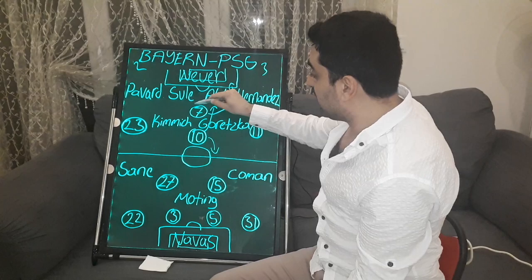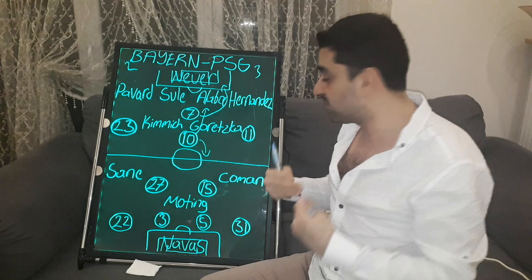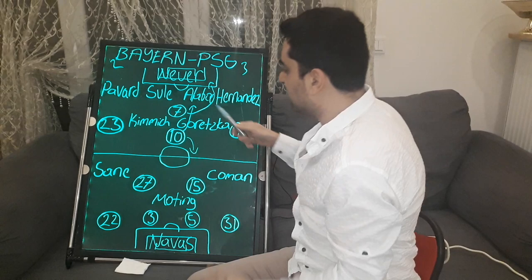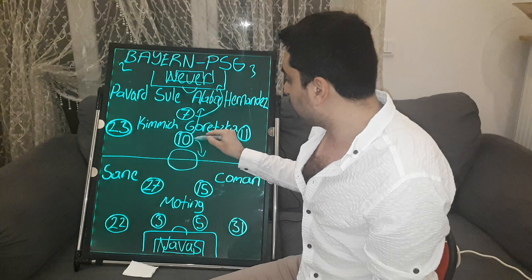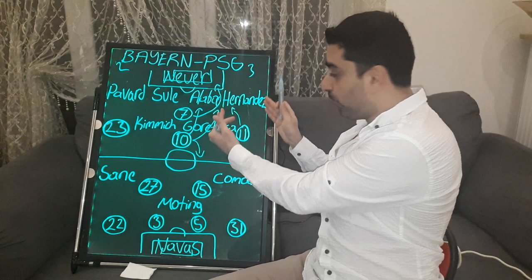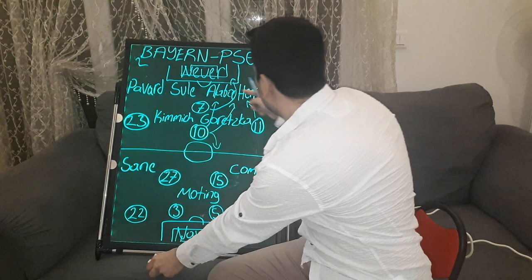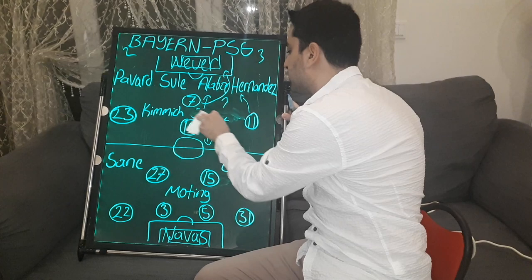Paris Saint-Germain went 1-0 ahead and continued developing dangerous attacks from Bayern Munich's left back side. Mbappe found another goal-scoring position, and Neymar and Di Maria came close at the same time, forcing Bayern's left wing-back. Hansi Flick had to make a substitution — Gorecka came off the midfield and Davies came on as left-back.